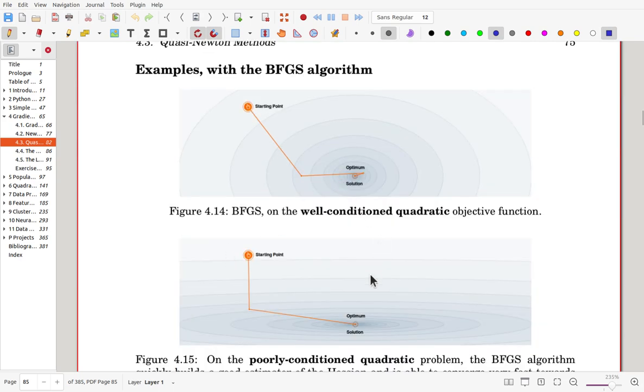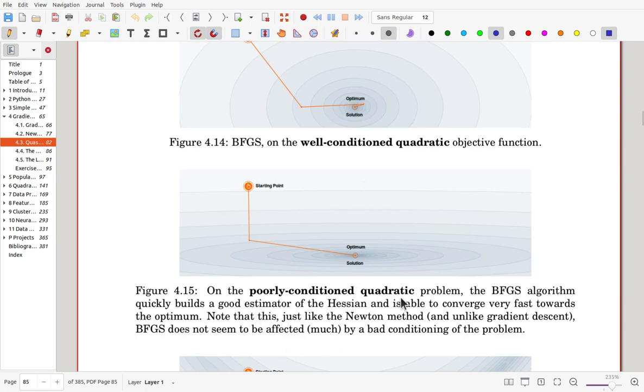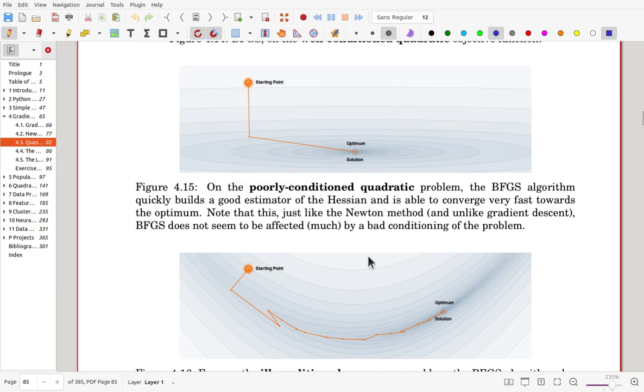Let's see here example. For the well-conditioned quadratic objective function, after three iterations, it has located the optimal point. For the non-convex objective function, here I believe there is 18 iterations or 17 iterations to locate the minimizer.